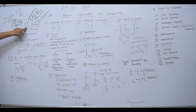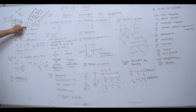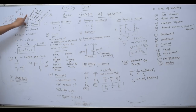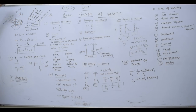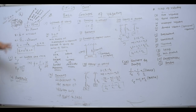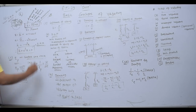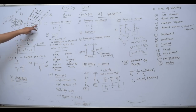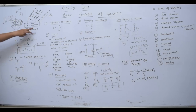So this is the basic equation of displacement. Now, can I write theta as omega T? Because I know omega is theta upon T, that's why I can write theta is equal to omega T. So the displacement equation becomes x = X sin(ωt).